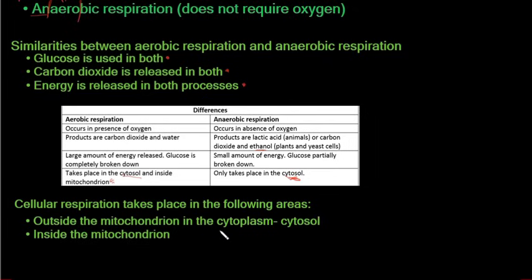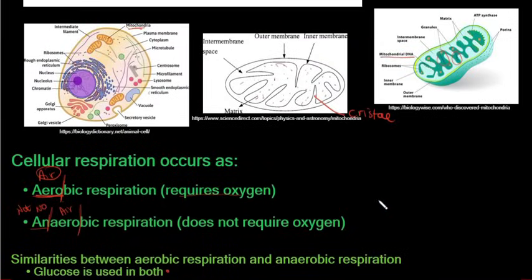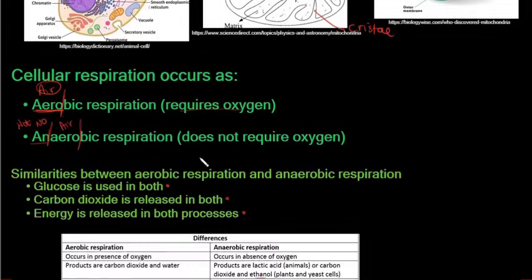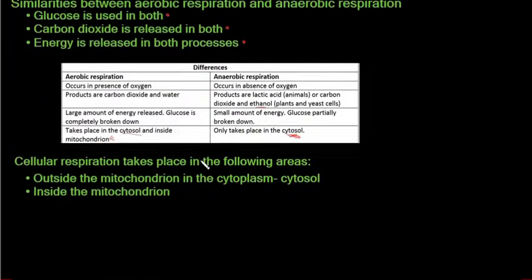Outside the mitochondrion is the cytoplasm, and that specific area is known as the cytosol. The remaining stages of aerobic respiration occur inside the mitochondrion.